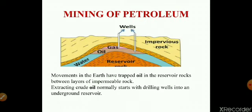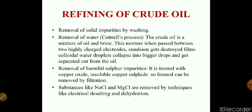Petroleum is obtained by mining from underground reservoirs. The crude petroleum obtained has many impurities, so it needs refining. The solid impurities are removed by washing. Water and brine are removed by Cottrell's process. Sulfur impurities are removed by treating with copper oxide. Substances like sodium chloride and magnesium chloride are removed by electrical desalting and dehydration.